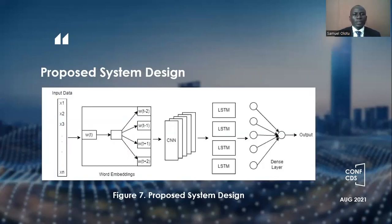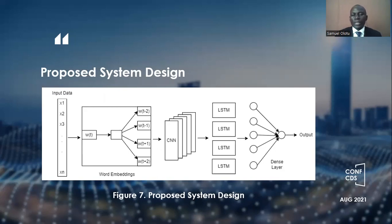The proposed model contains different modules. We have the input, which is supplied to the word embedding that converts the text data into numeric vectors. This is supplied into the CNN model, and the output — the extracted features — is supplied to the LSTM that carries out the classification into spam or HAM. HAM stands for the legitimate message.